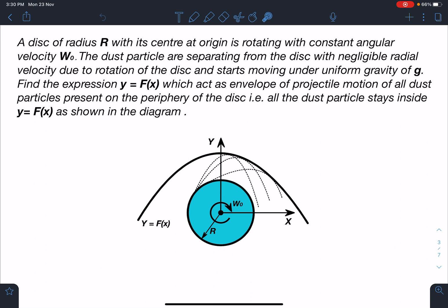Find the expression y = F(x) which acts as envelope of projectile motion of all dust particles present on the periphery of the disc, i.e., all the dust particles stay inside y = F(x) as shown in the diagram. This is a modification of a problem you would have seen in your projectile motion classes.